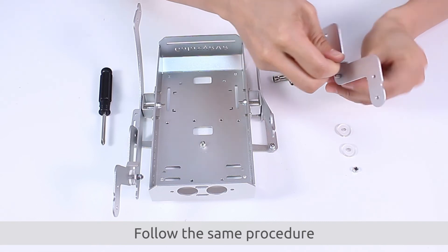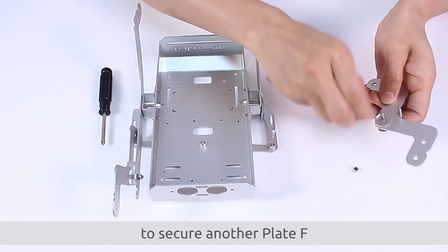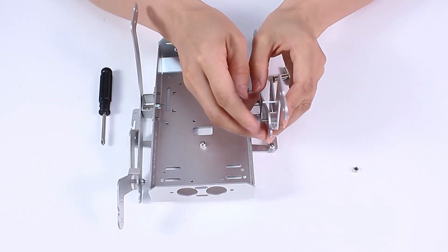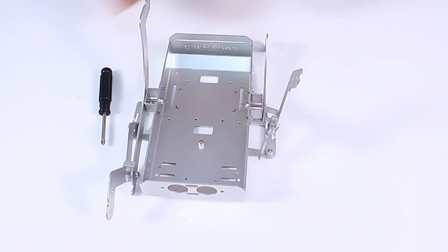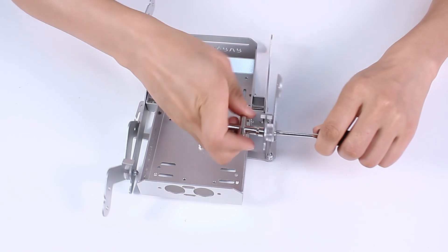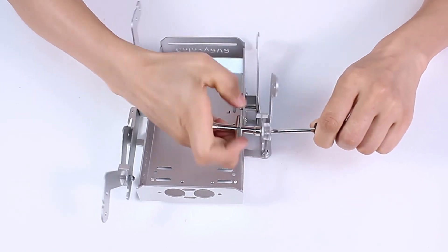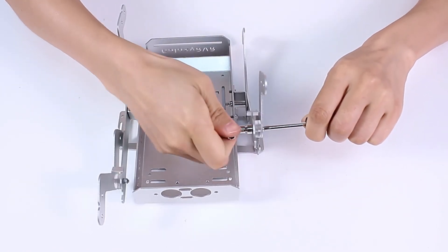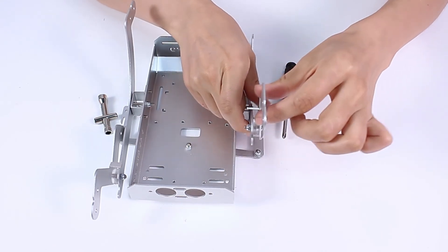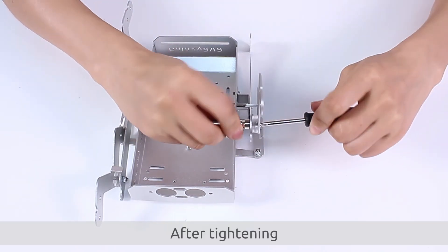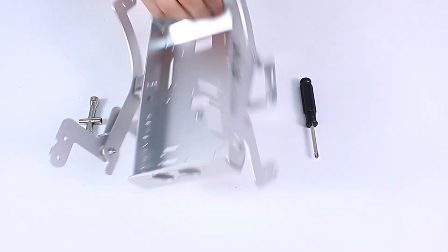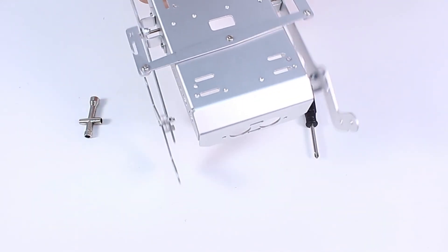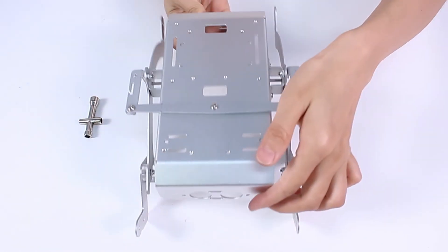Follow the same procedure to secure another plate F. After tightening, loosen it a bit again to allow free movement.